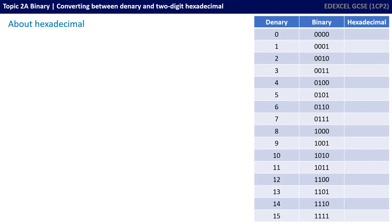And now we're introducing hexadecimal, which is a base 16 number system. It means we've got the numbers 0 through 15, and if you want a 16, it's a 1 and a 0.